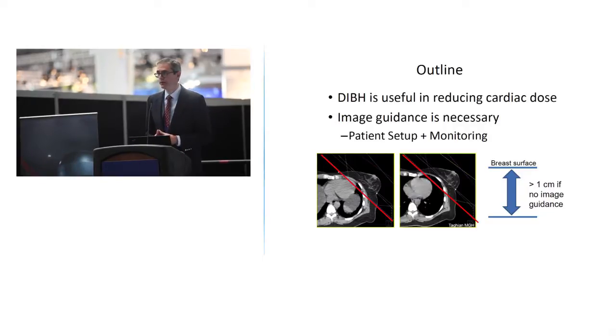By image guidance I'm going to refer to that in two different ways: one is just the initial setup of the patient prior to the breath hold, and then actually at the time of breath hold. Here showing you again what you saw in the first talk about how the heart can move out of the field under breath hold. We have some anecdotal data that suggests that without any form of image guidance, just setting up the patient like you normally would with tattoos and lasers and then asking them to take a breath, we saw significant variations in the breast surface greater than one centimeter. So I think we can do better than this.